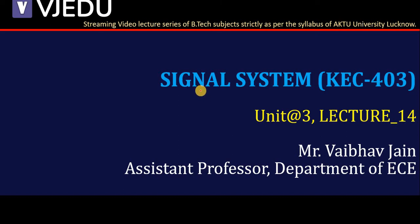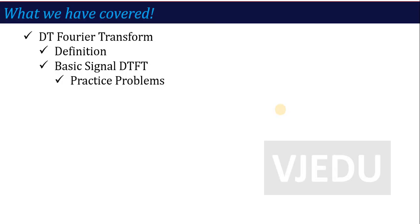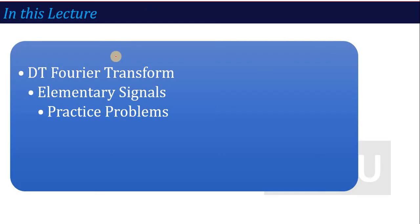Hello everyone, welcome to the video lecture series on Signals and Systems. The subject code is KEC403 and this is lecture number 14 of unit number 3. In the previous lecture, we started Discrete Time Fourier Transform — the basic formula to calculate the DTFT — and computed DTFT for some basic signals like δ(n), u(n), and a^n·u(n). In this lecture, we are going to talk about DTFT for more elementary signals.